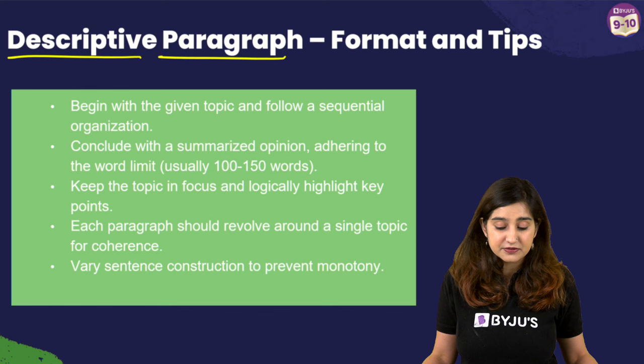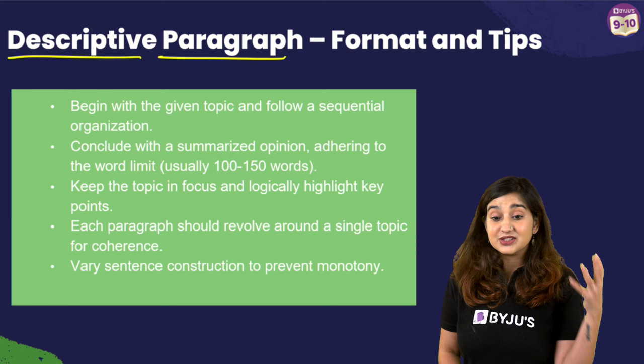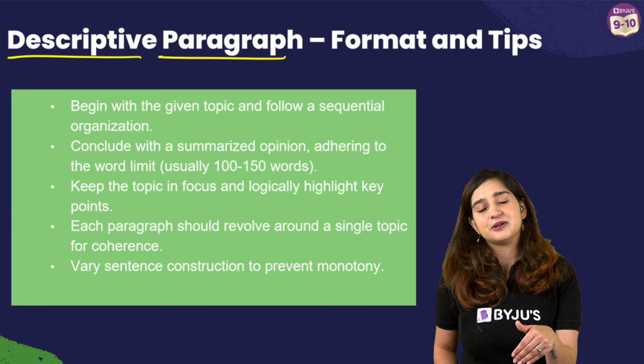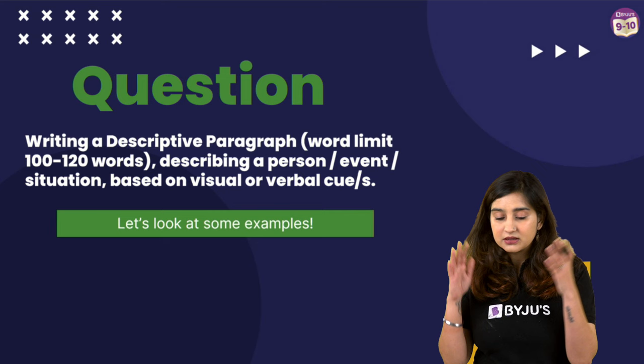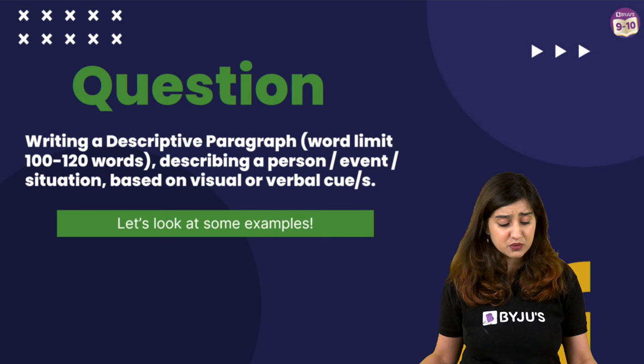Today we are going to look at three different questions, and at the end you will attempt one question on your own to see if your writing has improved. I will highlight the adjectives and language being used in these paragraphs so you can make a note and try to incorporate the same in your own writing. We are following the CBSE syllabus — writing a descriptive paragraph of 120 words describing a person, event, or situation. You may get a visual cue or a verbal cue.